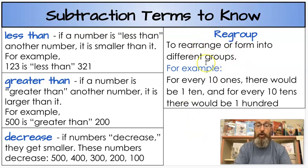And last is regroup. And we are going to be doing some regrouping today. When you regroup, you rearrange or you form into different groups. For example, for every 10 ones there'd be a ten. So if you borrow a ten, you're going to get 10 ones. And for every 10 tens there'd be a hundred. So if you ever had to borrow a hundred, you'd trade it for 10 tens because it's the same thing.